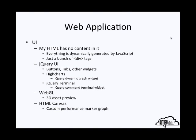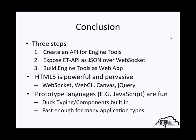In conclusion, I'm proposing three steps: first, create an API for your engine tools; second, expose this API as JSON over WebSocket; and third, build engine tools as a web application. HTML5 is very powerful and becoming more pervasive. In the last couple of years we've had WebSocket, WebGL, Canvas, and jQuery — these are all mainstream pieces of technology now and allow you to develop really cool applications inside a web browser.